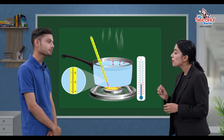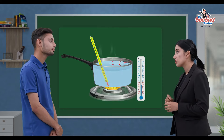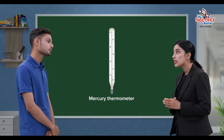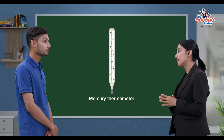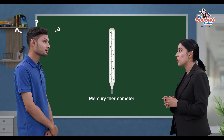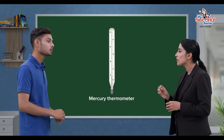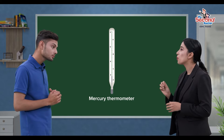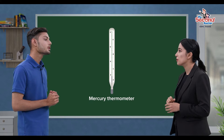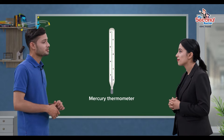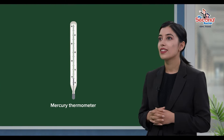Thermal equilibrium is an important application to see the thermometer and temperature. Mercury thermometer works on the principle of thermal equilibrium. What is it, Teacher? I don't understand it.